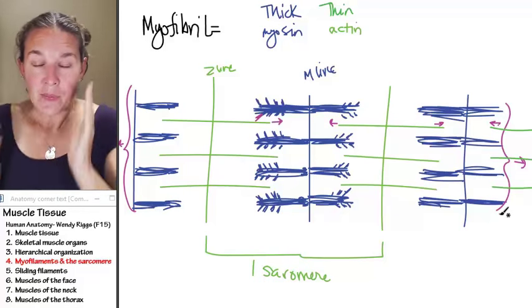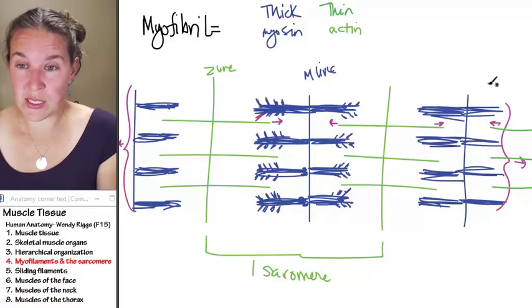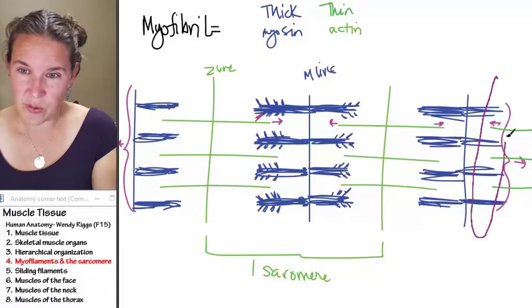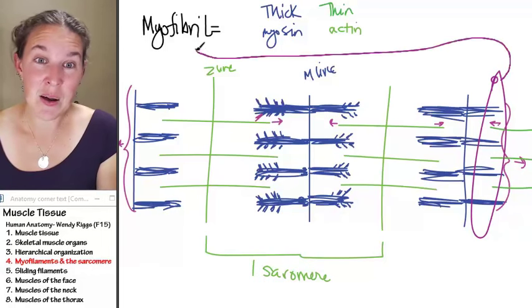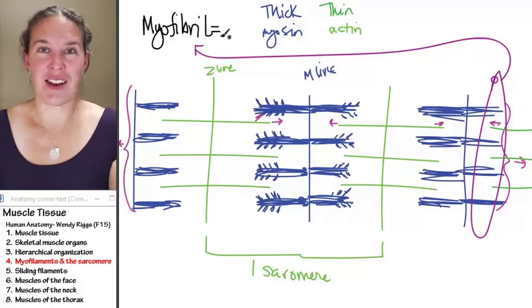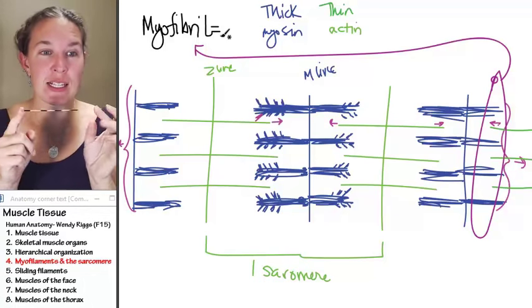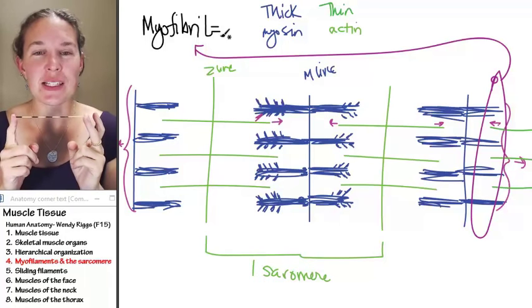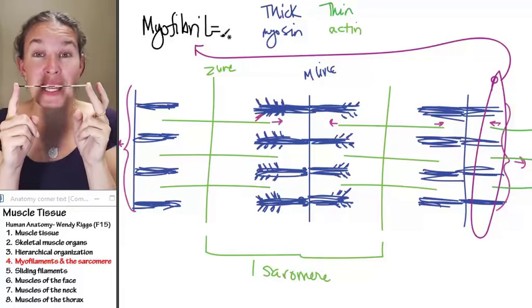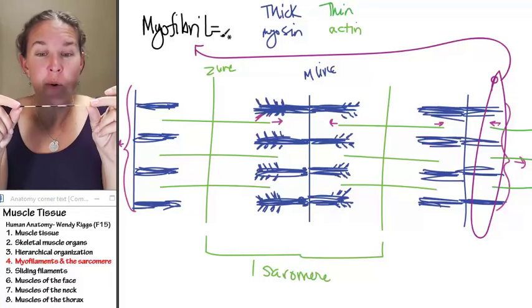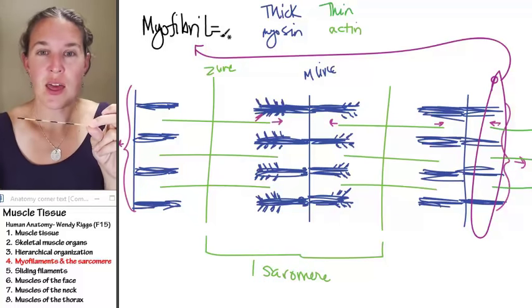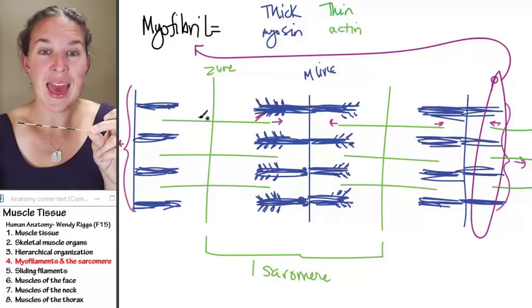This whole thing right here - that is a myofibril. I made you a myofibril. This is a spaghetti noodle - I'm obsessed with this idea of bundles of bundles. I could break the spaghetti noodle up into thick filaments and thin filaments.